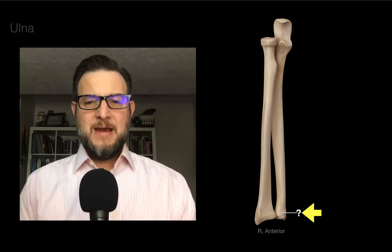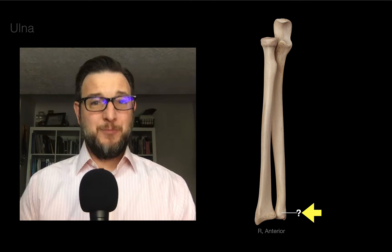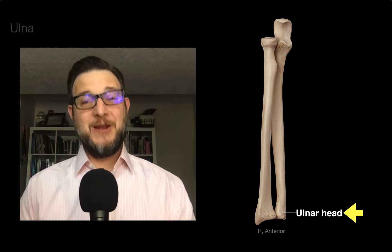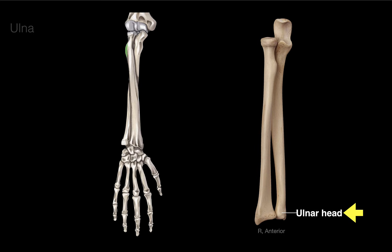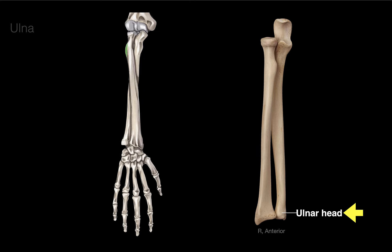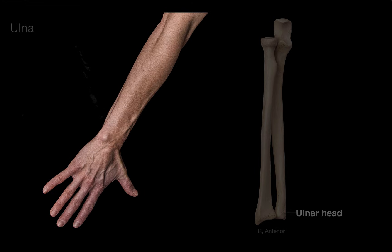Then down at the bottom, the rounded portion of the distal ulna — we call it the ulnar head or head of the ulna. This is where the distal radius pivots during pronation and supination, where that synovial pivot joint occurs. To see it in surface anatomy, you need to pronate, and there is that head of the ulna.